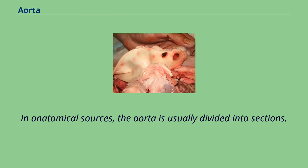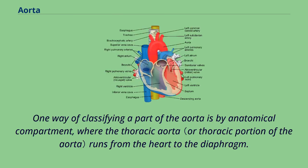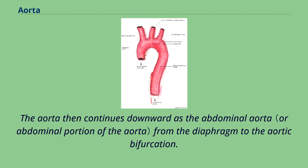In anatomical sources, the aorta is usually divided into sections. One way of classifying a part of the aorta is by anatomical compartment, where the thoracic aorta runs from the heart to the diaphragm.